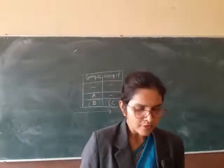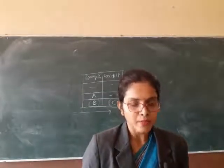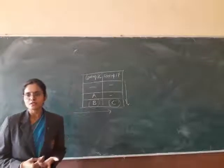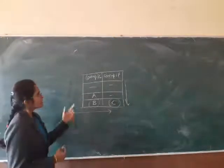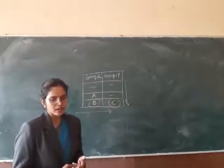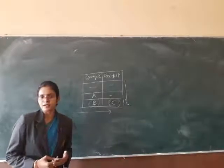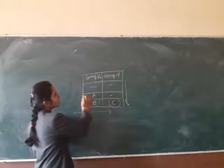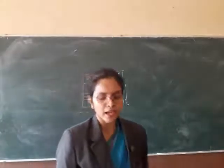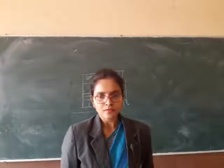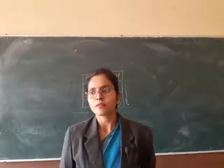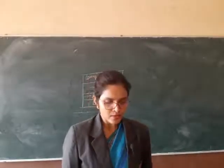Next — which type of ion, cation or anion, will be formed by element A? Cation मतलब positive charge और anion मतलब negative। Group 16 के members non-metals हैं, और non-metals क्या form करते हैं? Anion। So answer: A will form an anion, because it is a non-metal and its tendency is to gain electrons।